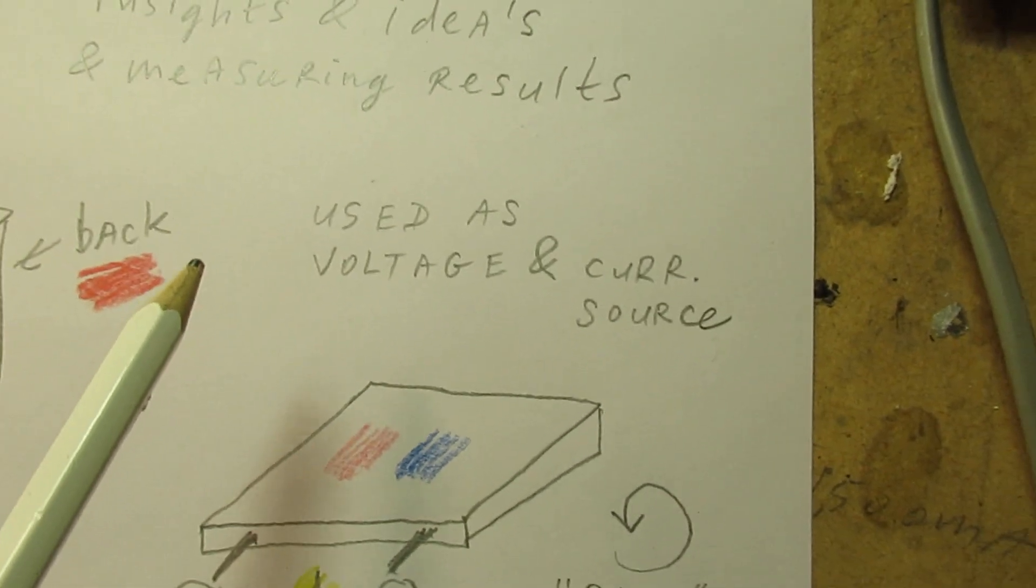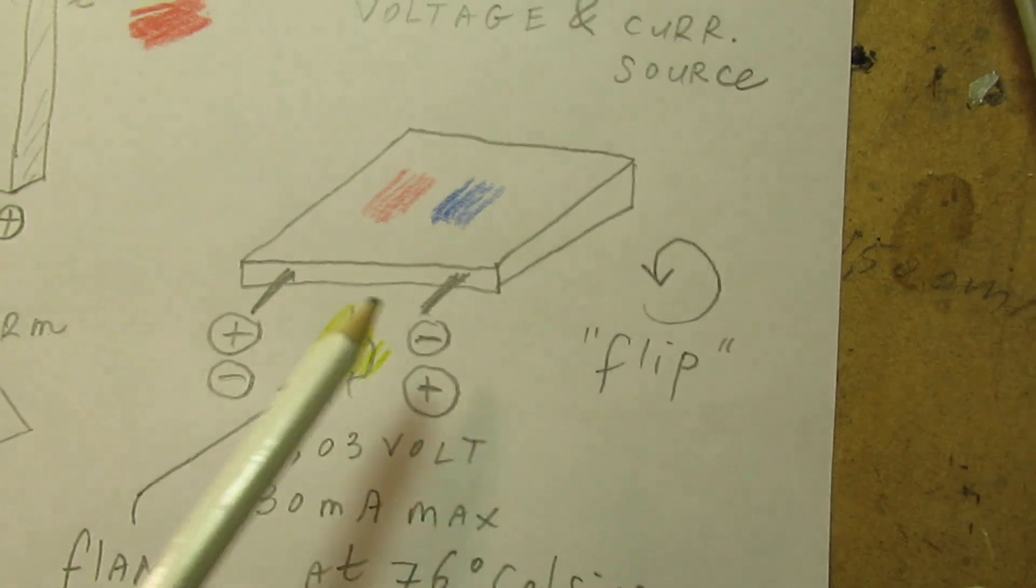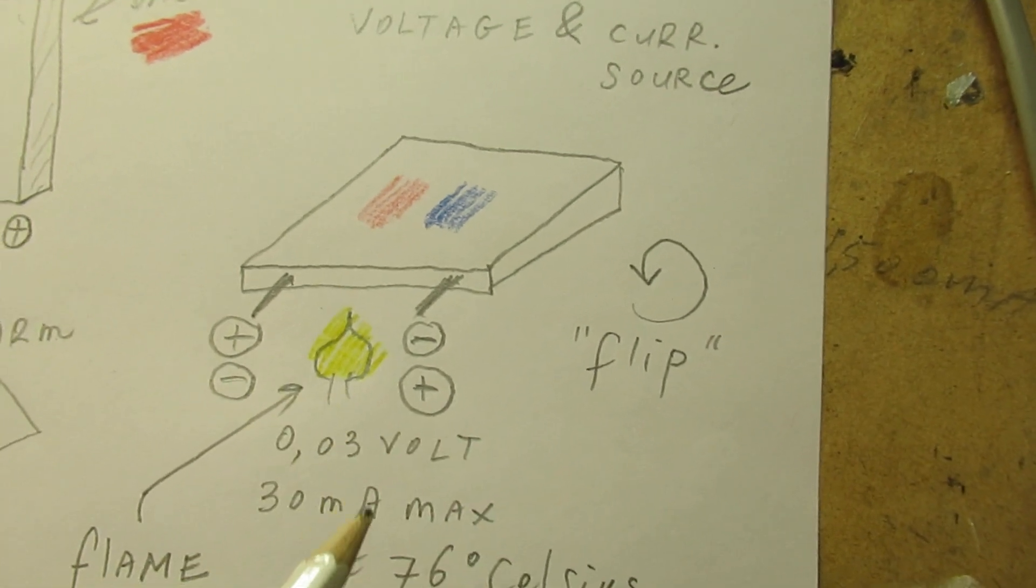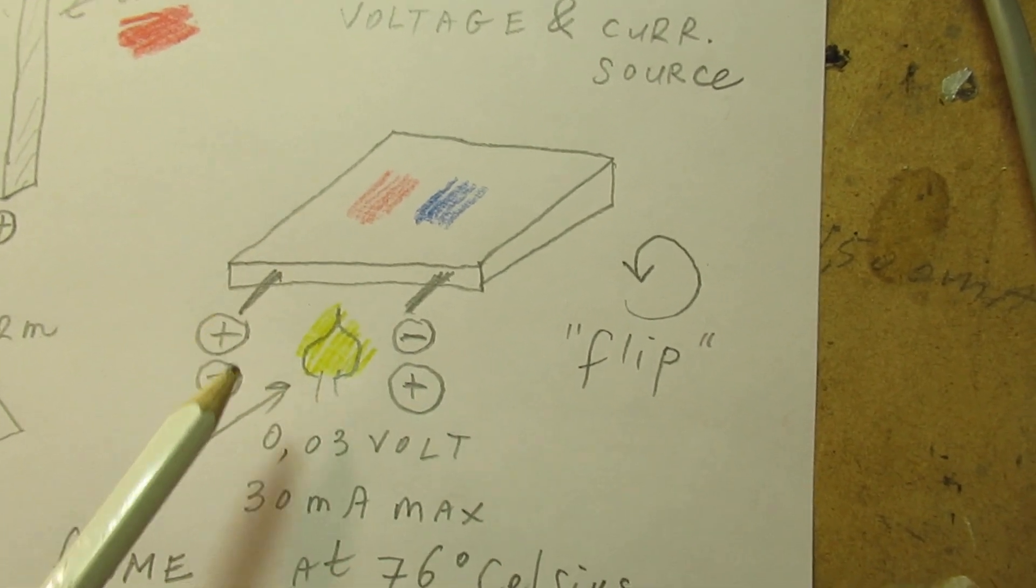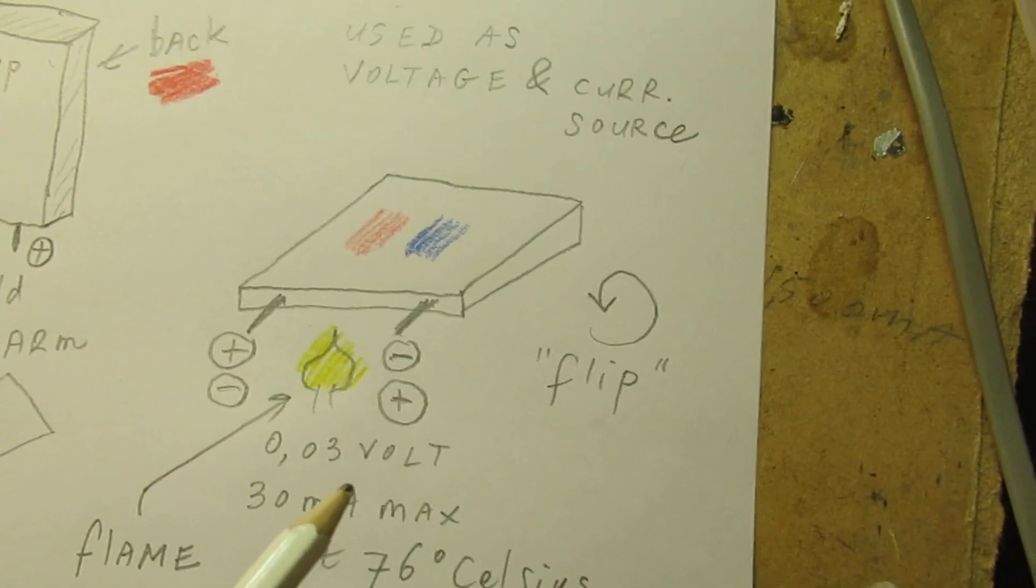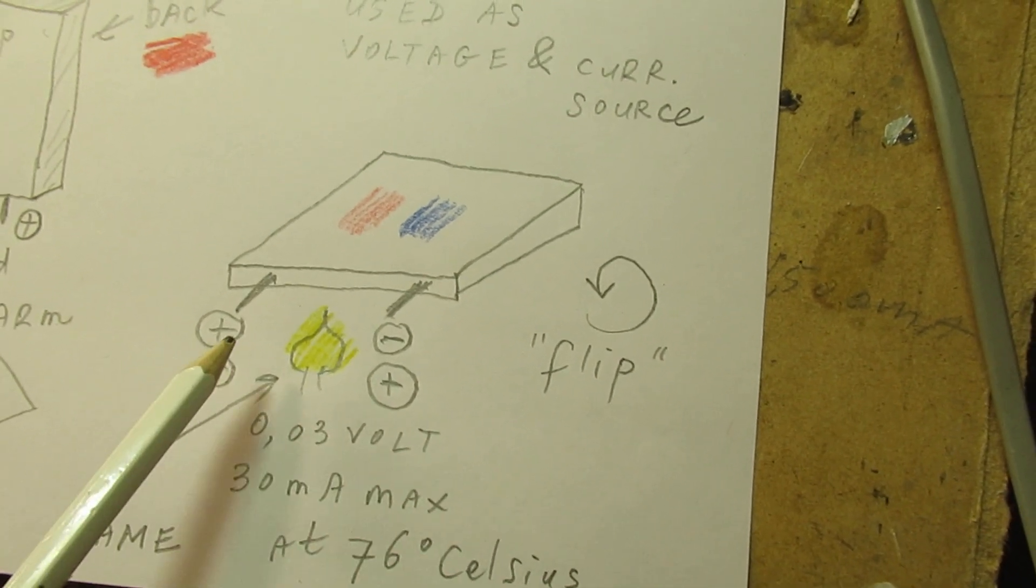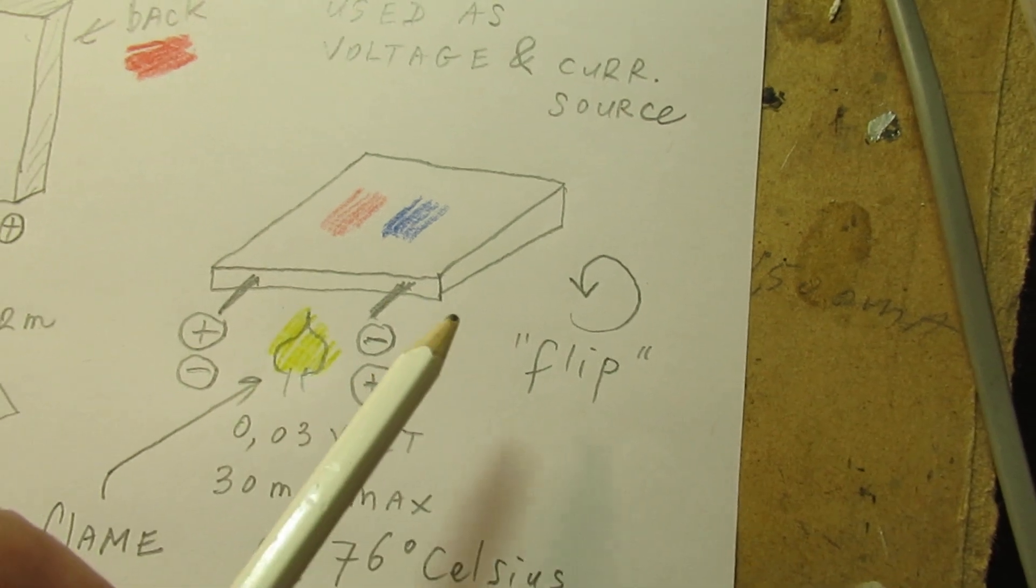Like I told, I use it as a voltage and current source. The heater is under the Peltier element. And again the same phenomenon. The positive and the negative here. There will be a current flowing.